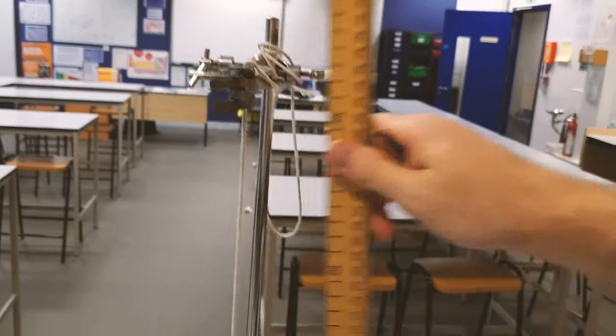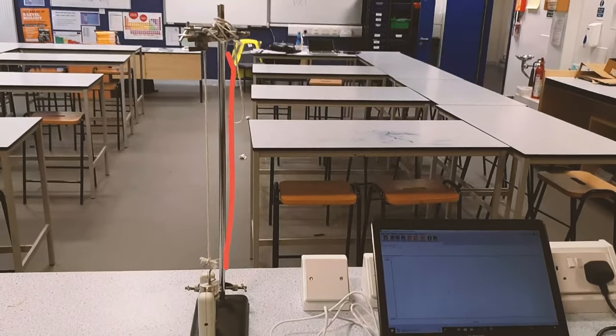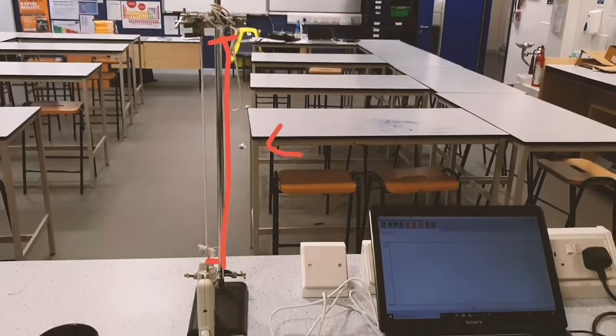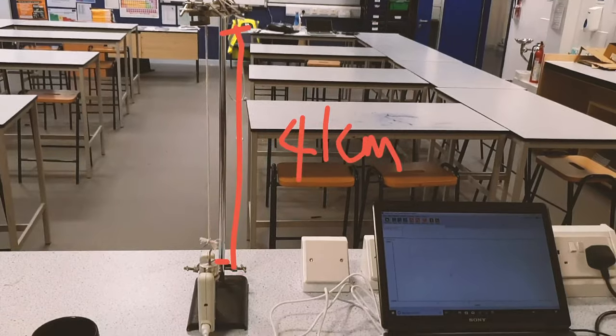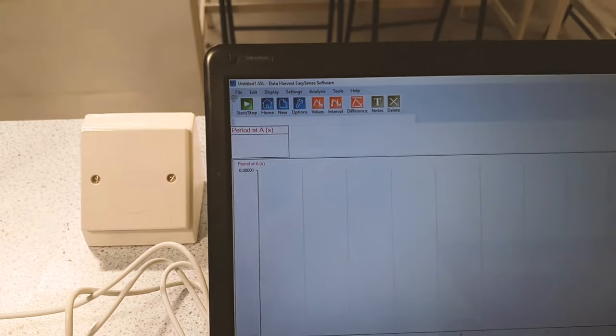How could you do that more accurately? Maybe clamping the ruler in place. It's not really appropriate to use a set square or plumb bob because the pendulum is itself hanging vertically. But I hope you saw that I was getting down to eye level at 90 degrees to the scale, so that I was avoiding parallax error.